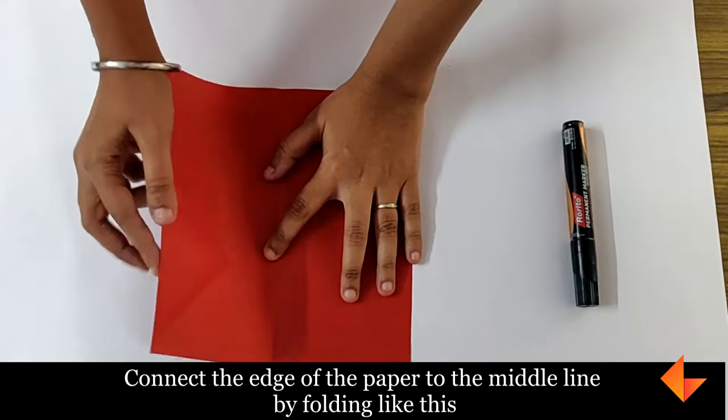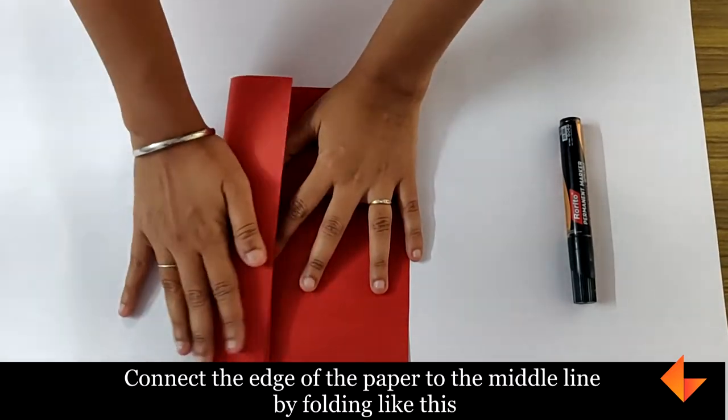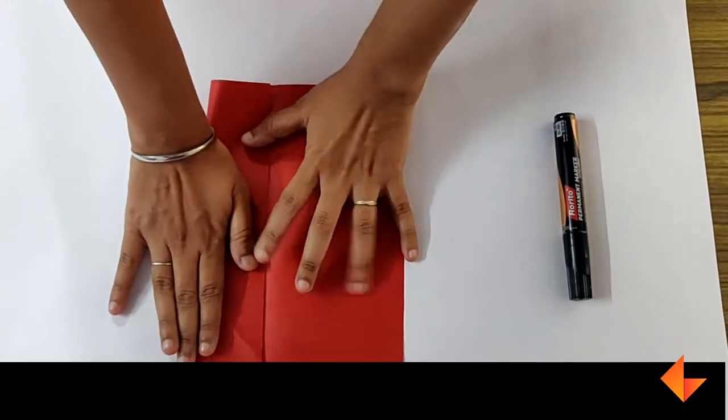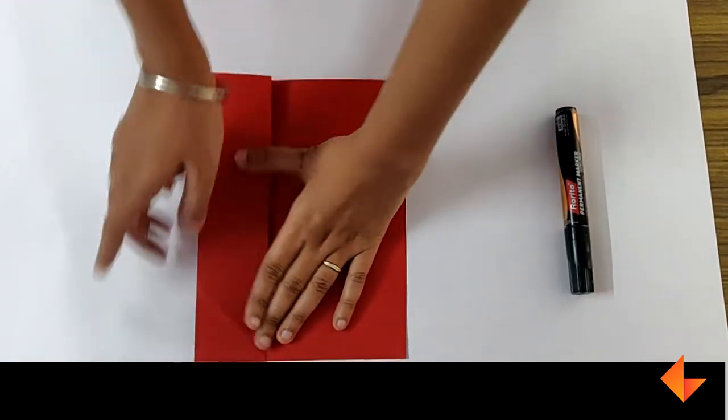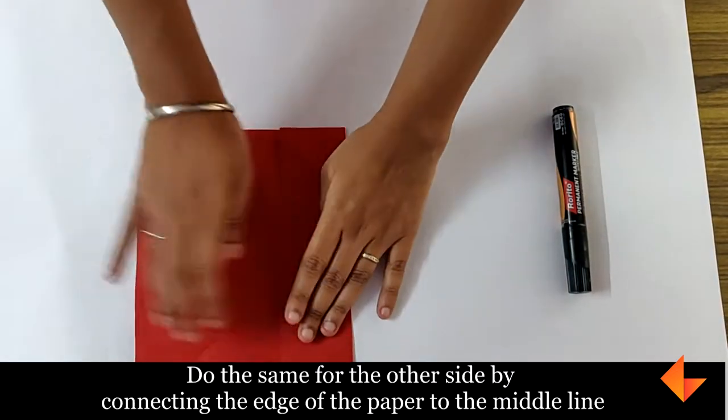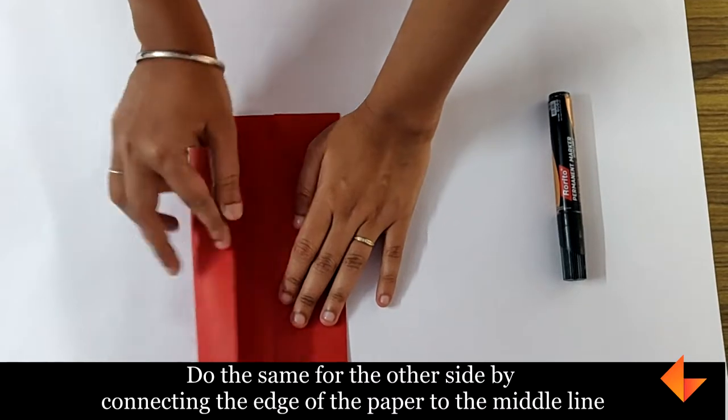Connect the edge of the paper to the middle line by folding like this and crease. Do the same for the other side by connecting the edge to the middle line.